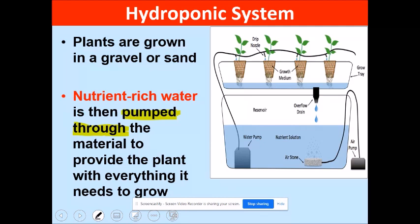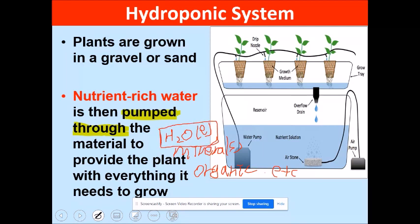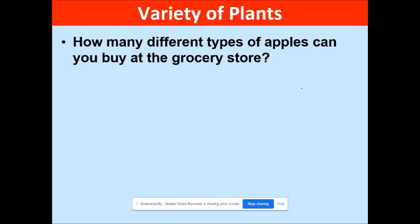Plants are grown in gravel or sand, and nutrient-rich water is pumped through hoses to provide everything the plant needs to grow. Photosynthesis plays a huge role — H2O, minerals, and organic materials are all essential, especially water. Different varieties of plants require different conditions, which leads us into genetics and genetic engineering.